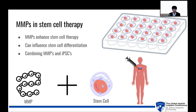MMPs in stem cell therapy. MMPs significantly enhance stem cell therapy by influencing stem cell differentiation. MMPs can modify the extracellular matrix and alter signaling pathways, promoting the differentiation of stem cells into cardiomyocytes. By combining MMPs with iPSCs, we can speed up the differentiation process, making stem cell therapy far more efficient.